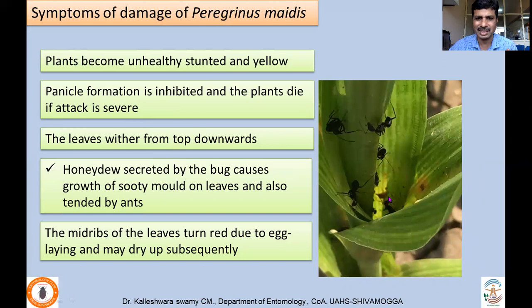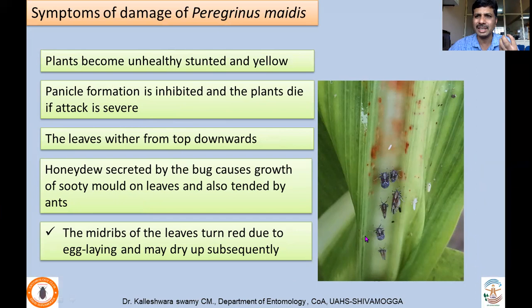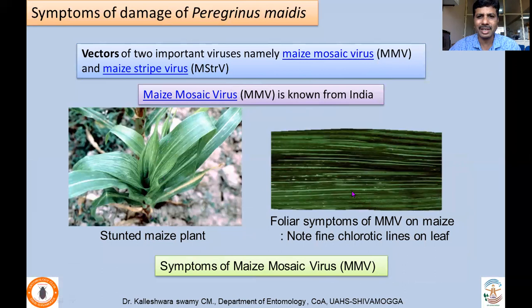Honeydew secreted by these bugs attracts ants. Sooty mold grows wherever nymphs and adults are present, and the midrib of leaves turns red due to egg-laying activity. These insects completely inhibit plant growth and affect yield. In addition to direct damage, they also transmit two important viruses — Maize Mosaic Virus and Maize Stripe Virus — of which Maize Mosaic Virus is very prevalent in India. Symptoms include stunted growth and fine chlorotic lines on the leaves.